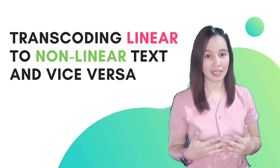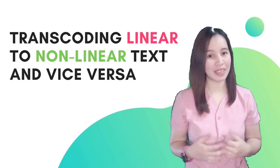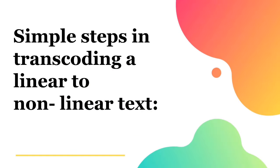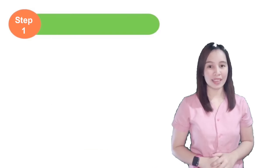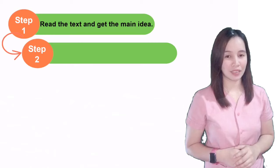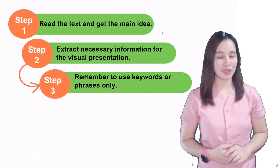Transcoding linear to non-linear text and vice versa is a skill that one has to be familiar with since it can be used in our everyday lives. There will be times when you would have to transcode linear text to non-linear text to make it easier for other people to understand, and a non-linear text to linear text to have a detailed description of a certain topic. Here are the simple steps to transcode linear text to non-linear text: Step 1 — Read the text and get the main idea. Step 2 — Extract necessary information for visual presentation. Step 3 — Remember to use keywords or phrases only.